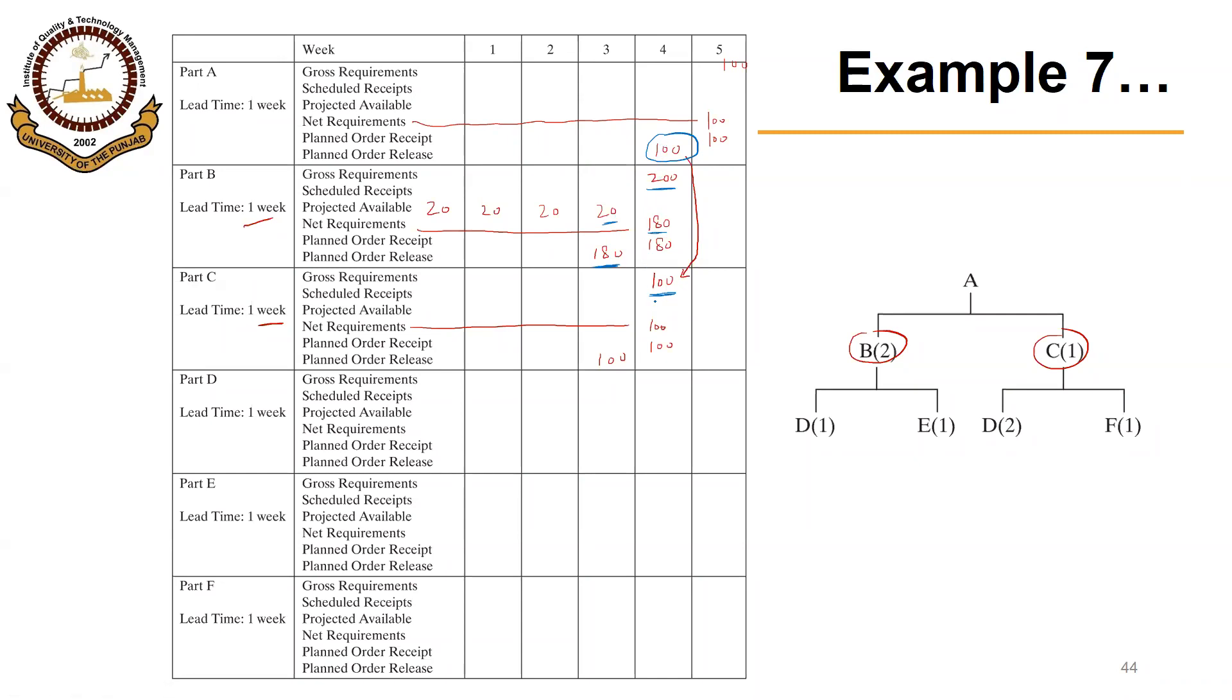Same is about C. We need to have 100 C's available at the beginning of week 4. So in order to have those 100 C's, we need to start their production or their purchase at the beginning of week 3. We are ignoring the safety lead time in this case. We are also ignoring the scrap factor and safety stock as well.